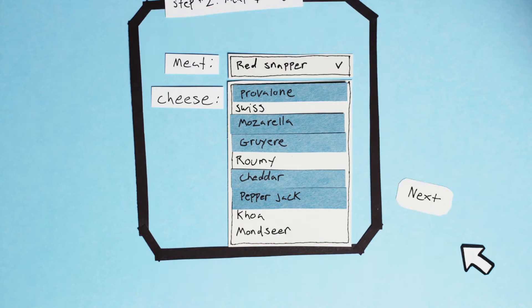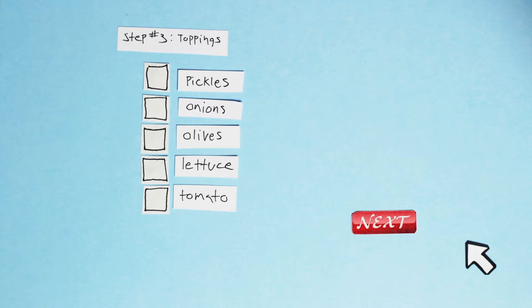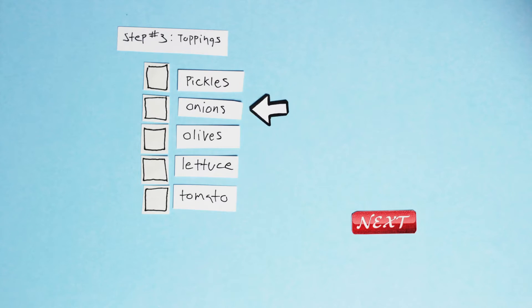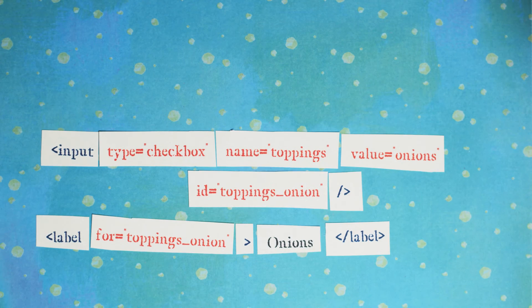And now to finish my masterpiece with toppings. These are checkbox inputs, so I can select any combination of toppings that I want. Just like radio buttons, checkboxes are grouped by giving them all the same name. Notice how I can click on the text next to the checkbox to select an option? That's because the text and the input are wrapped in a label tag. Sometimes the input is outside of the label tag — in that case, there should be 'id' and 'for' attributes to connect them.